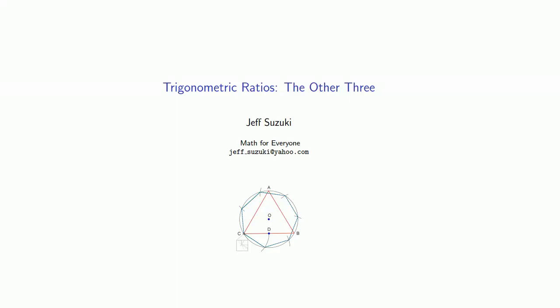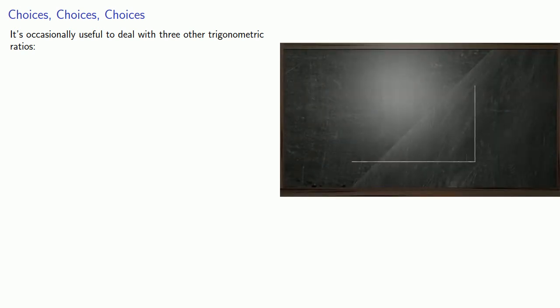Sine, cosine, and tangent really are the only trigonometric ratios you need to know, but it's occasionally useful to deal with three other trigonometric ratios. We'll define them in terms of a right triangle and an acute angle with measure A.